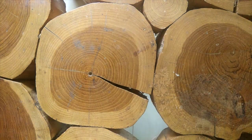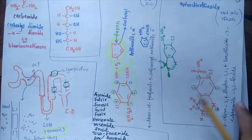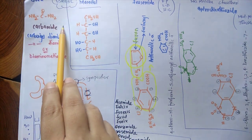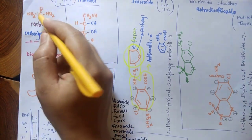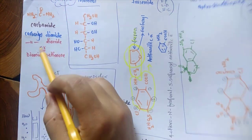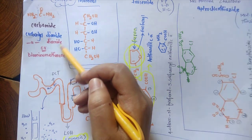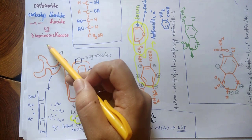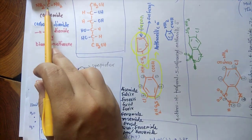Coming towards the structure of urea — all of you might know the structure of urea which is NH₂-CO-NH₂. This is also known as carbamide. It has a C double bond O (carbonyl), with NH₂ groups — CO-NH₂ is an amide. It is also known by the names carbonyldiamide or diaminomethanone.